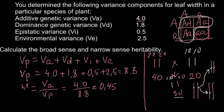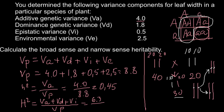Now I will show how to calculate broad sense heritability. This is H-capital-squared, and it equals additive variance VA plus dominance variance VD plus epistatic variance VI, all divided by total phenotypic variance VP. On the top we have 4.0 plus 1.8 plus 0.5, which gives 6.3, divided by 8.8, and the answer is 0.72. This is our answer for broad sense heritability.